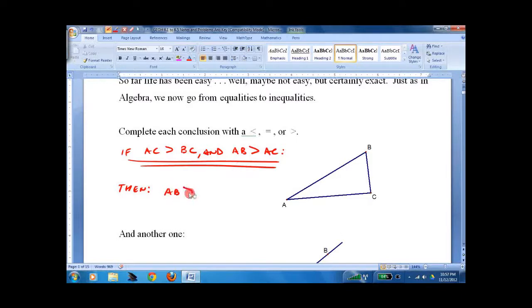AB is greater than BC. We call this transitive.